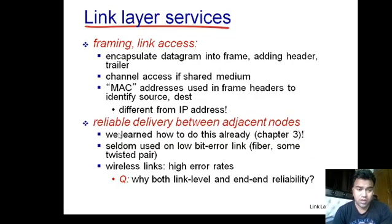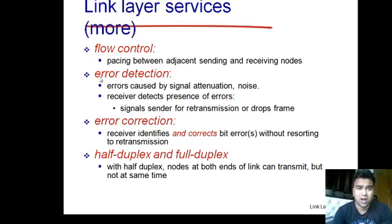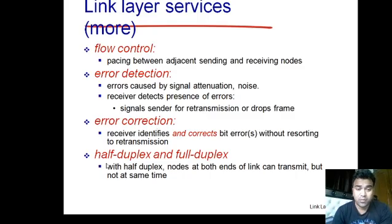Other Data Link Layer services include reliable delivery between adjacent nodes, which is especially important for wireless links with high error rates. Additional services are flow control between adjacent sending and receiving nodes, error detection (errors detected are corrected or the data is retransmitted), and support for both half-duplex and full-duplex links.